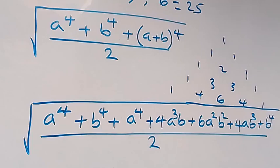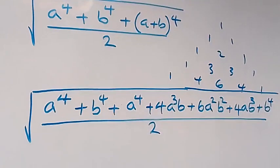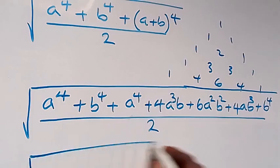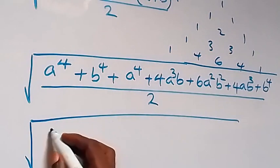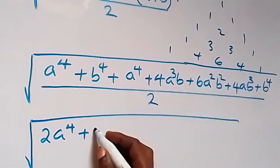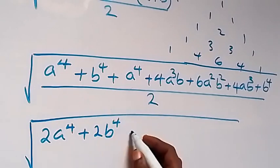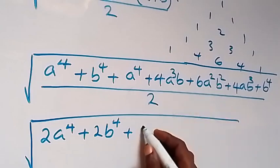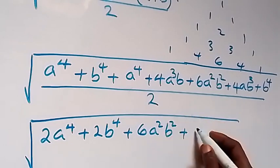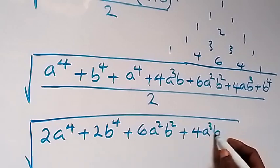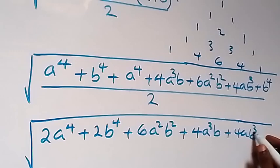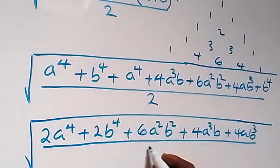Then we can bring the like terms together: a raised to the power of 4 and a raised to the power of 4 make 2, so here we have square root of 2a raised to the power of 4, then plus 2b raised to the power of 4, then plus 6a squared b squared, then plus 4a cubed b, and plus 4ab cubed, then all over 2.